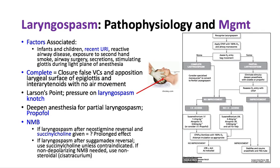Larson's point — the laryngospasm notch — when pressed firmly while lifting the jaw, can sometimes break laryngospasm. If there is partial laryngospasm with some air movement, deepen the anesthesia with a bolus of propofol. If the laryngospasm is not breaking or there is complete laryngospasm with no air movement and the patient is becoming bradycardic, neuromuscular blockade with succinylcholine is indicated.